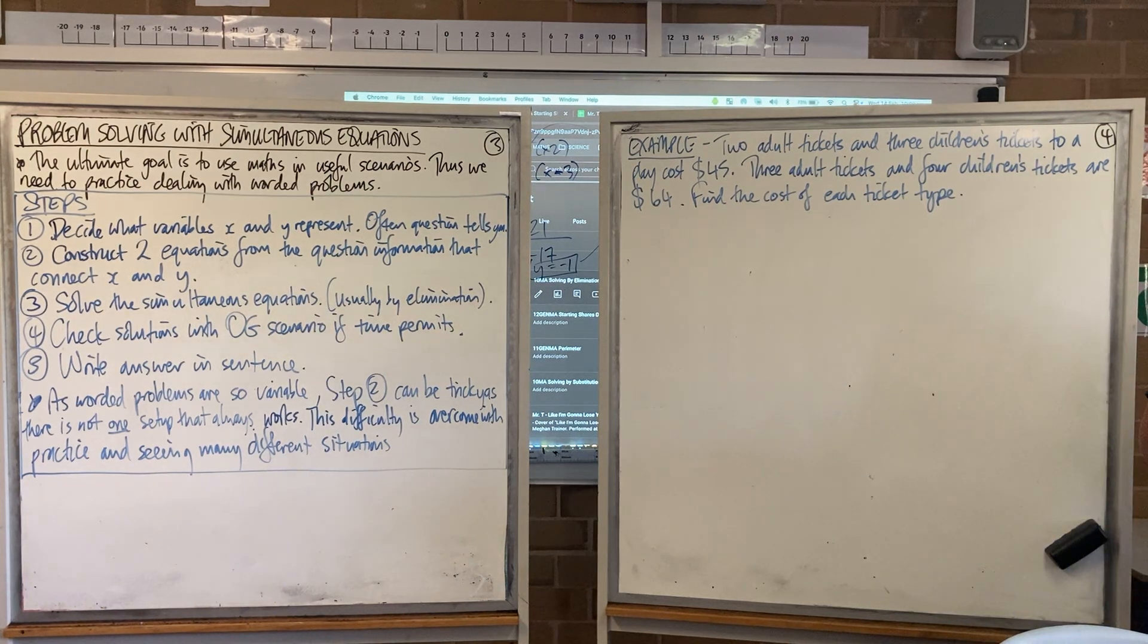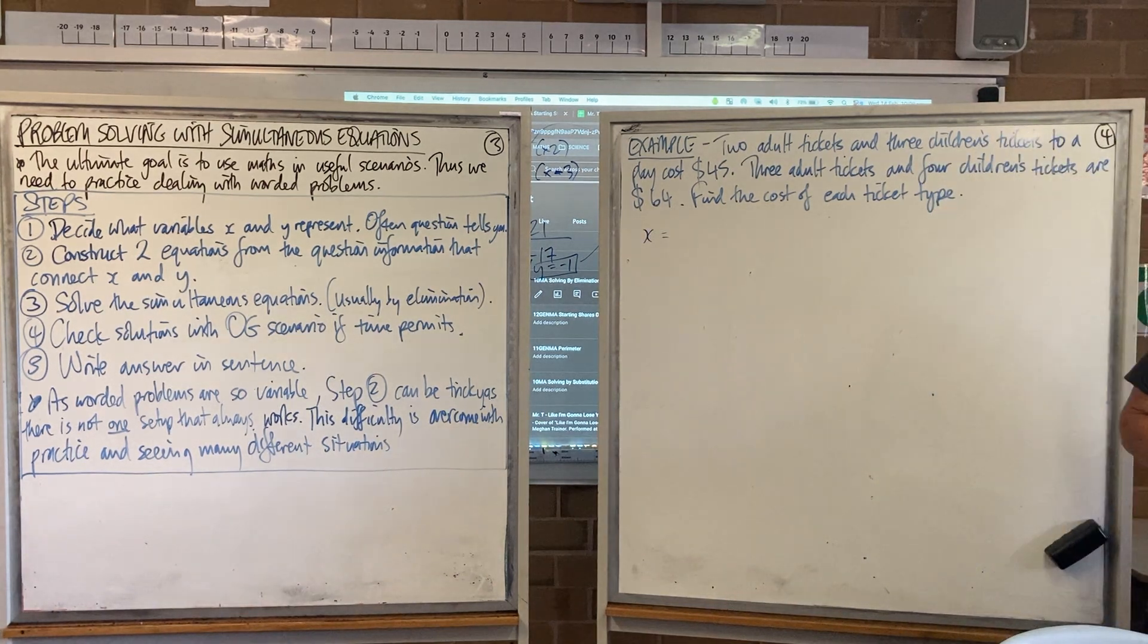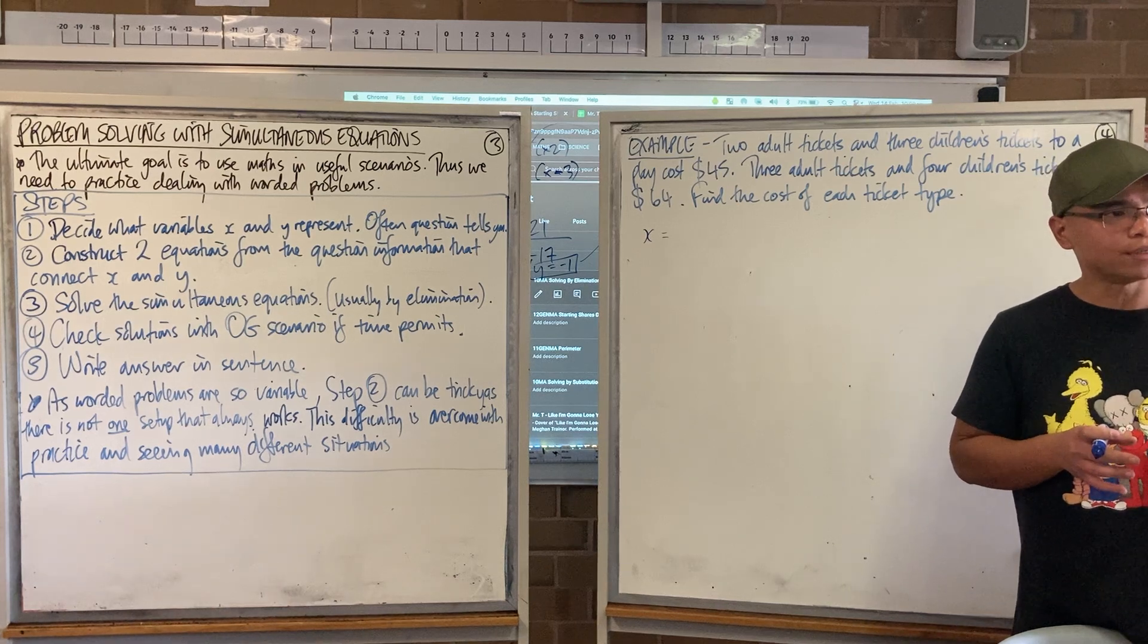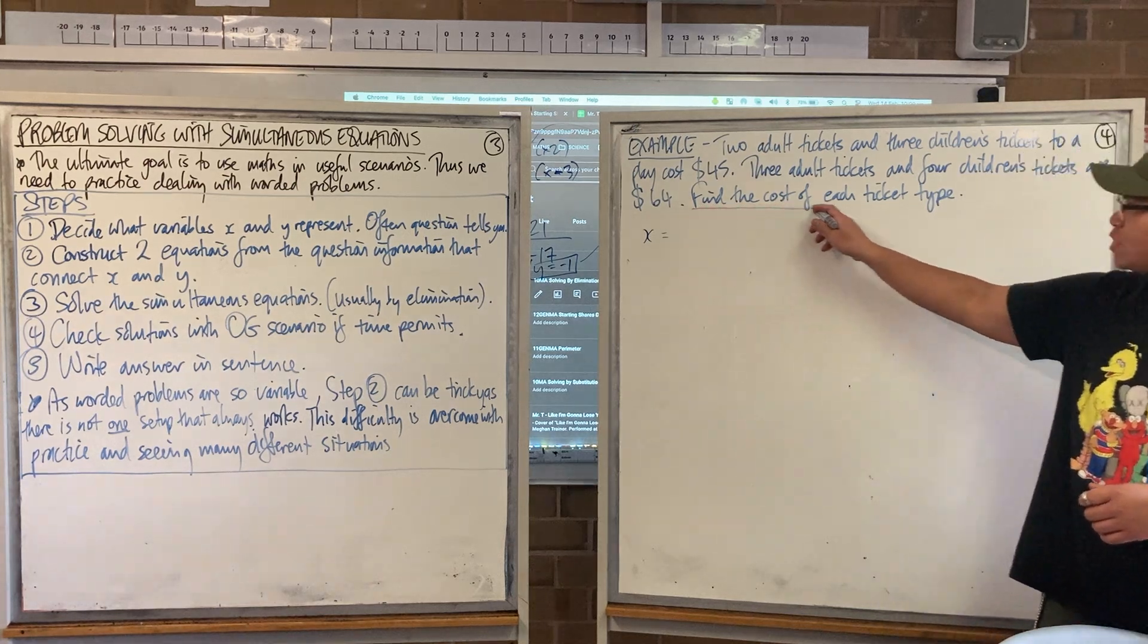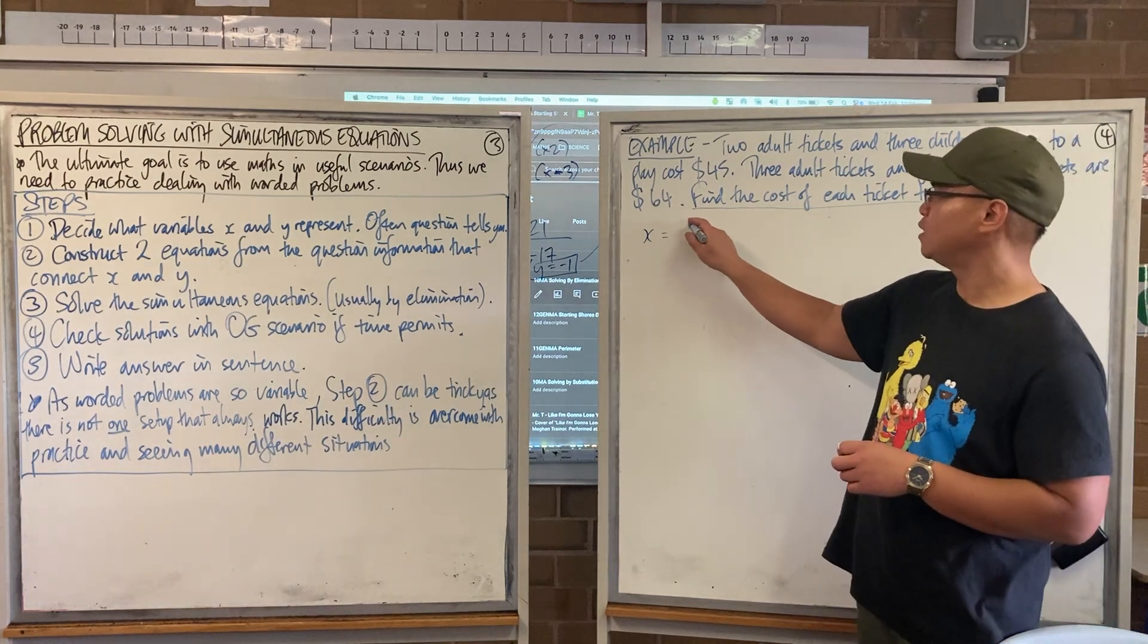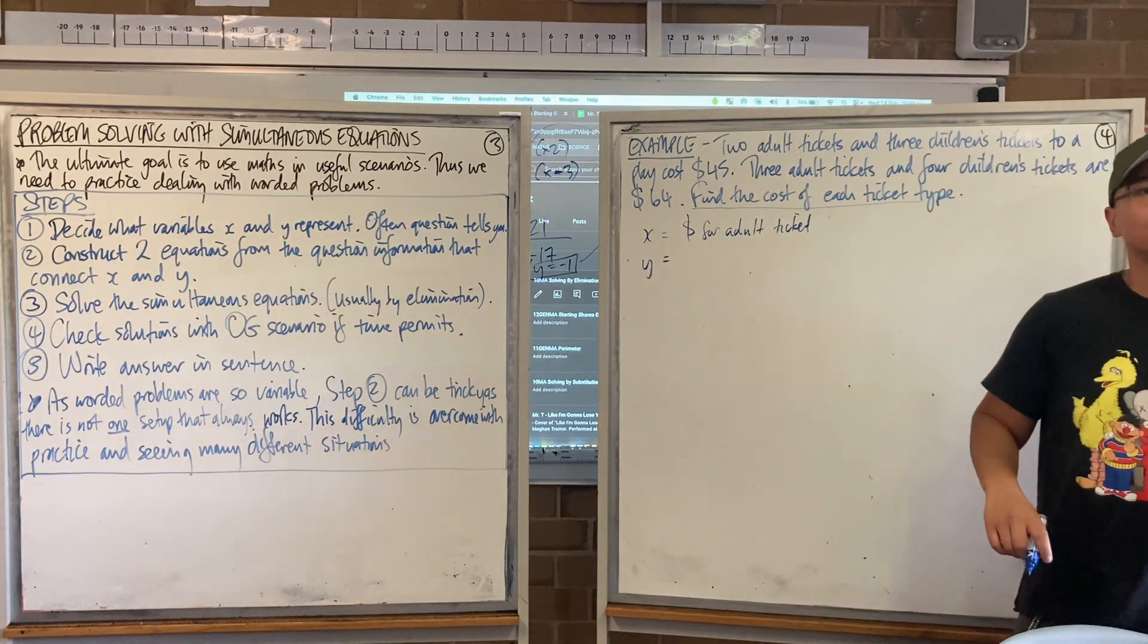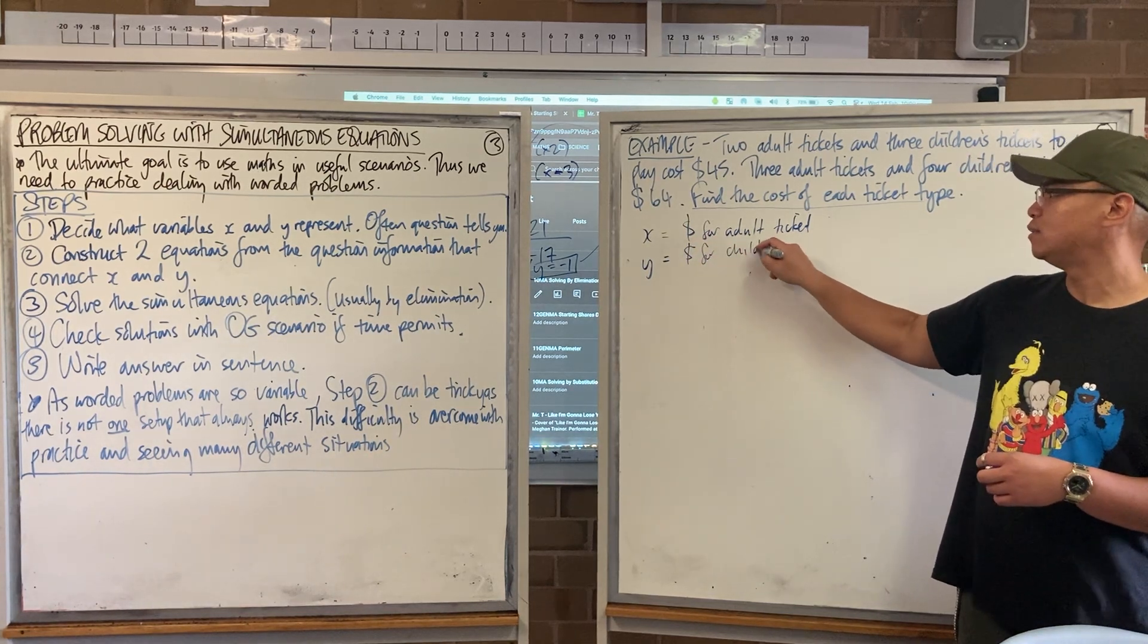Decide what variables x and y represent. What can I allow x to represent? If I'm finding the cost of each ticket type, what could x represent? The cost of which kind of ticket? Good. X is dollars for adult ticket. What could y then represent? Cost of child ticket. Y is dollars for child ticket.